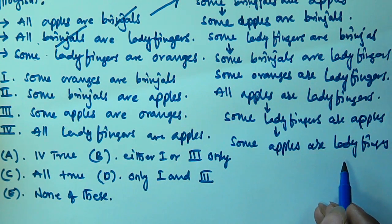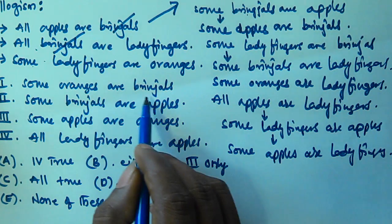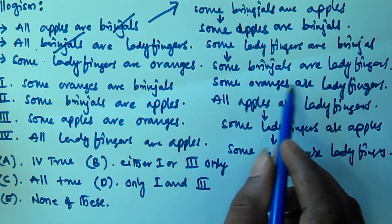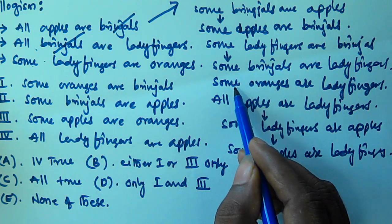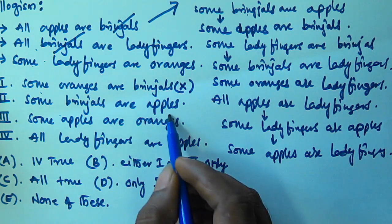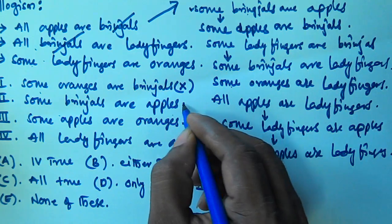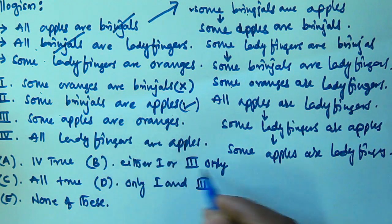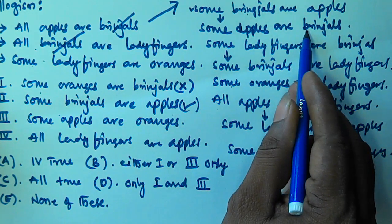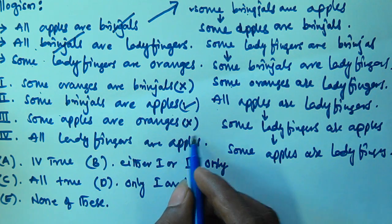So we derived all possible conclusions from the given three statements. Now we compare them with the given conclusions. Conclusion 1: Some oranges are brinjals — the only orange statement we derived is Some oranges are ladyfingers, so this is false. Conclusion 2: Some brinjals are apples — this matches our derived conclusion, so this is true. Conclusion 3: Some apples are oranges — we only derived Some apples are ladyfingers and Some apples are brinjals, so this is false.